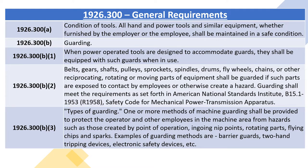1926.300(b)(2): Belts, gears, shafts, pulleys, sprockets, spindles, drums, flywheels, chains, or other reciprocating, rotating, or moving parts of equipment shall be guarded if such parts are exposed to contact by employees or otherwise create a hazard. Guarding shall meet the requirements as set forth in American National Standards Institute B15.1-1953 (R1958) Safety Code for Mechanical Power Transmission Apparatus.